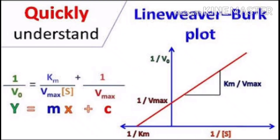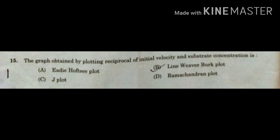There are certain drawbacks to the Michaelis-Menten equation, so for convenience we take its reciprocal. Taking the reciprocal of the Michaelis-Menten equation gives: 1/v₀ = (Km/Vmax) × (1/[S]) + 1/Vmax. When plotted on a graph, this gives a straight line — following the form y = mx + c — and this graph is known as the Lineweaver-Burk plot. It is obtained by plotting the reciprocal of initial velocity against substrate concentration, and the correct answer is option B: Lineweaver-Burk plot.